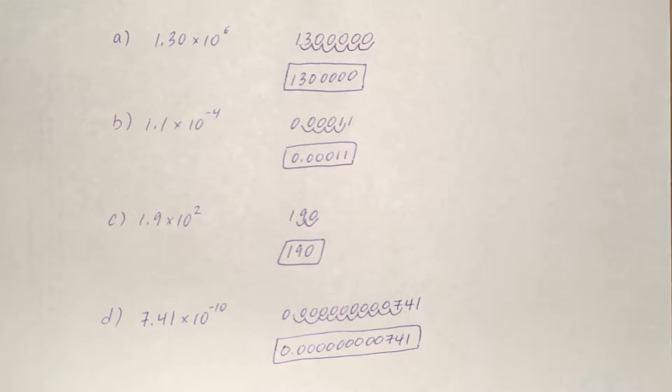So 1.30 times 10 to the sixth, that's going to be converted to 1,300,000. You can see I have it at the top there, above the boxed answer, where I've taken the decimal place and moved it six places to the right.